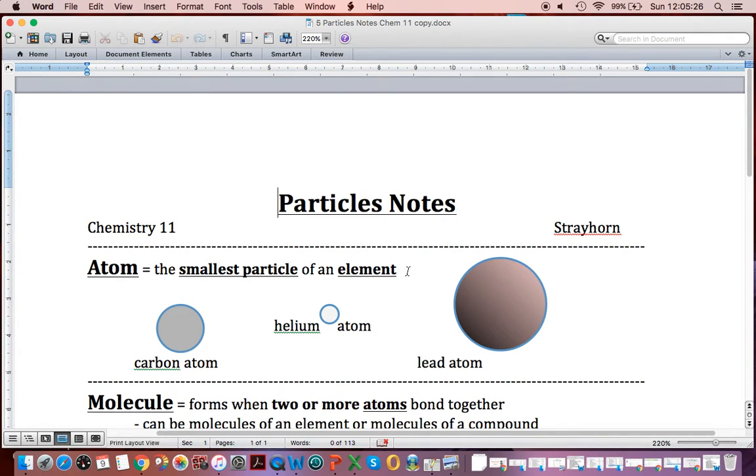So the atom is the smallest particle of an element, and each element is going to have its own kind of atom. Now, based on isotopes, we know they can have different types of atoms with different numbers of neutrons. But for our purposes, we'll just treat it as though each element has its own unique atom, and that atom will have a specific number of protons.